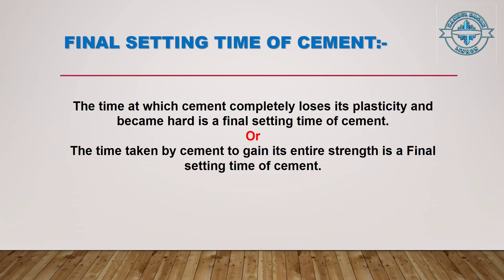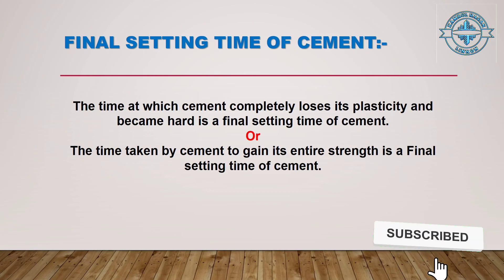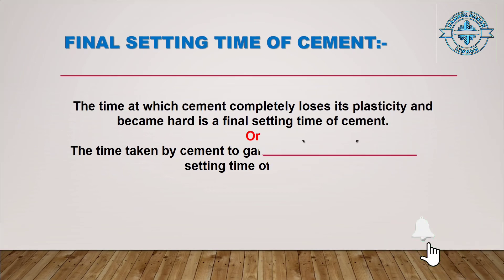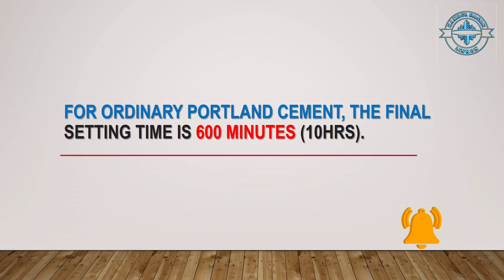Now, final setting time of cement: the time at which cement completely loses its plasticity and becomes hard is called the final setting time of cement. Another definition: the time taken by cement to gain its entire strength is the final setting time. For ordinary Portland cement (OPC), the final setting time is 600 minutes, or 10 hours.